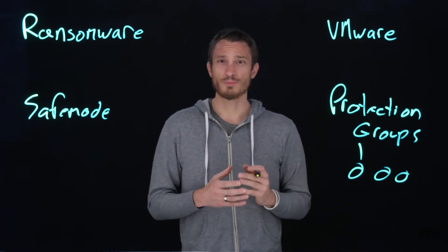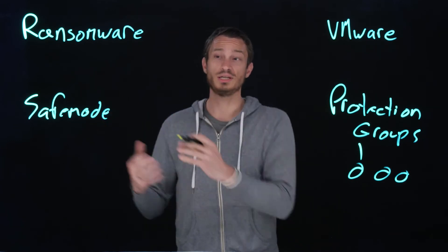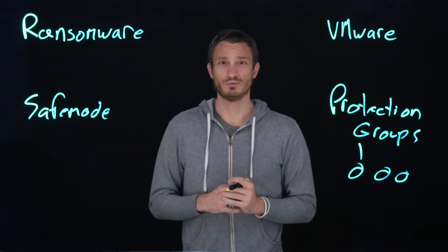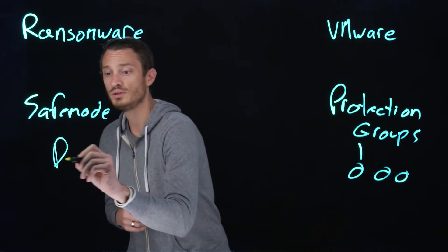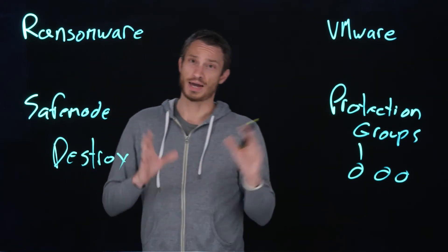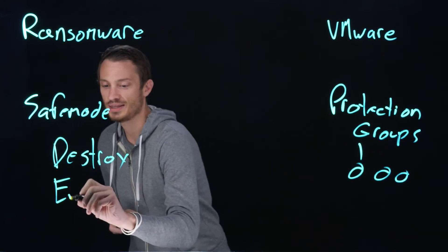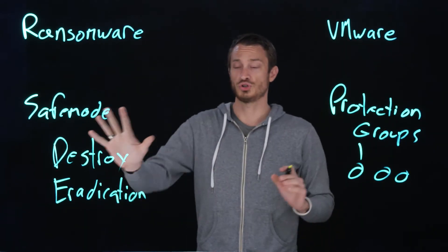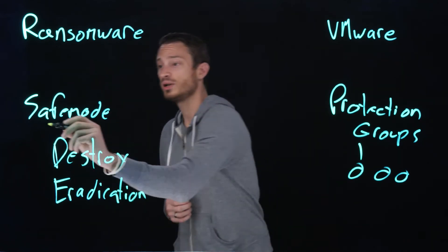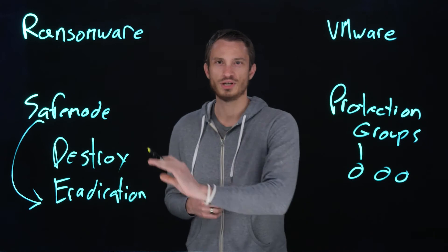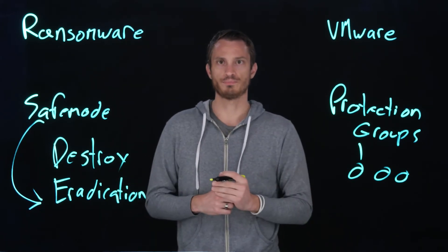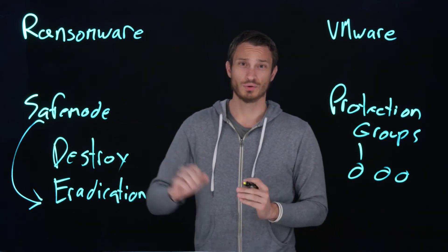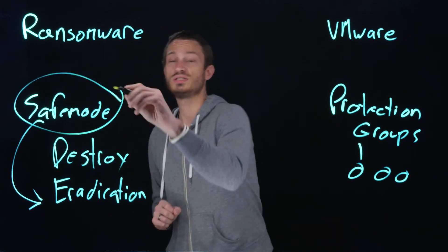What about those point-in-times? What about any volume — what if someone deletes one of my volumes? Another part of Safe Mode is that really deleting an object on the Flash Array is a two-step process: first you destroy it, and then you eradicate it. Eradication means the object is now gone. Destroying it is like putting it in the recycling bin. Safe Mode disables the ability to manually eradicate that object. So yes, you can destroy it, but it doesn't go away until the time specified in your recycling bin setting, and that cannot be changed when Safe Mode is enabled.